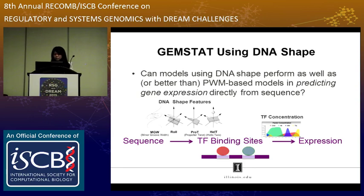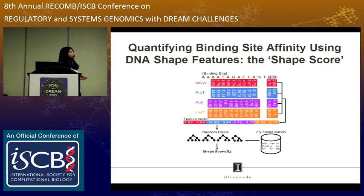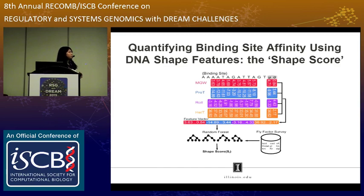To build this kind of model, the first problem is how to quantify binding site affinity from DNA shape. Here is the pipeline: given a potential binding site sequence, we use four shape feature vectors to describe it. At each nucleotide position there is a value for each shape feature. We add two more values — the mean and standard deviation for each vector — then concatenate all four feature vectors into a major feature vector. This vector is used as input to a random forest classifier.